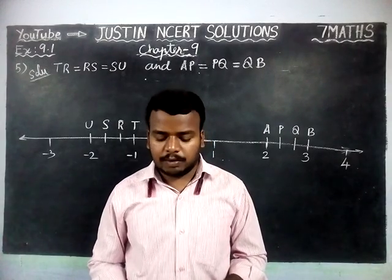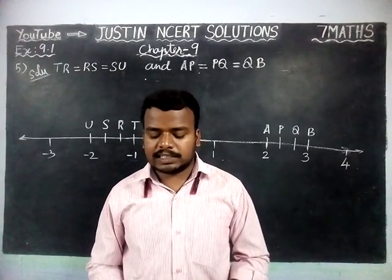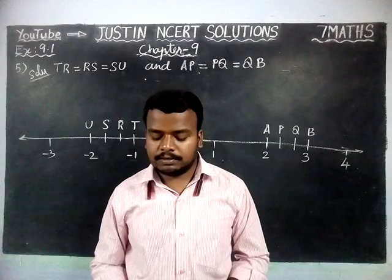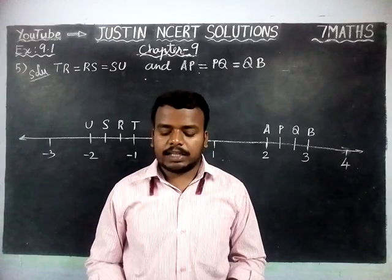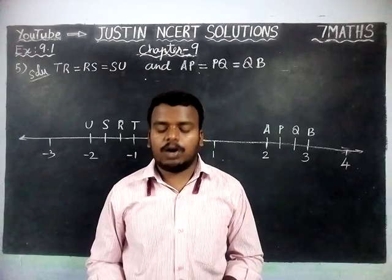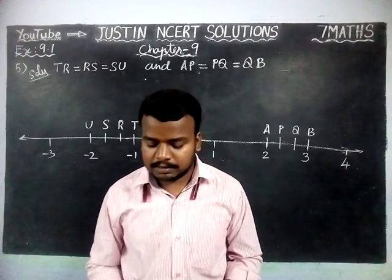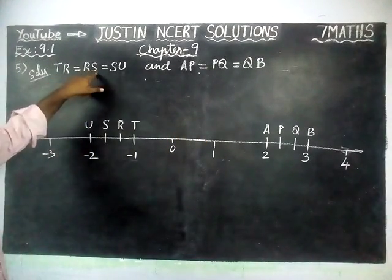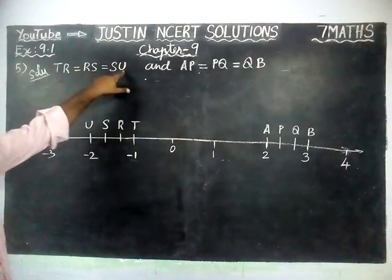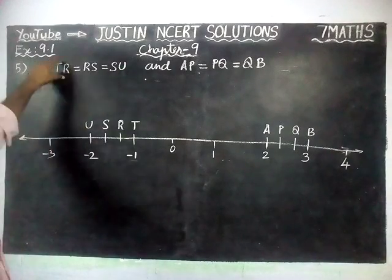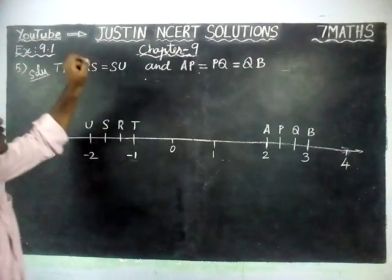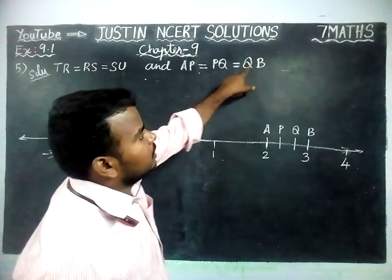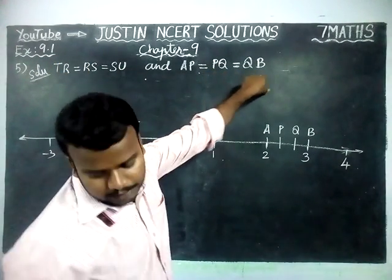The question is: The points P, Q, R, S, T, U, A, and B on the number line are such that TR is equal to RS is equal to SU, and AP is equal to PQ is equal to QB.